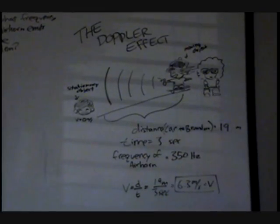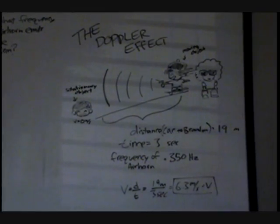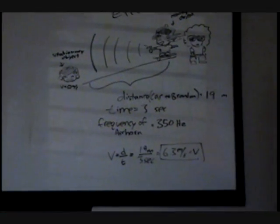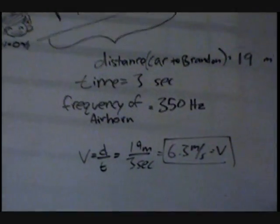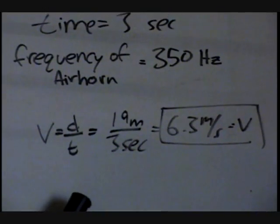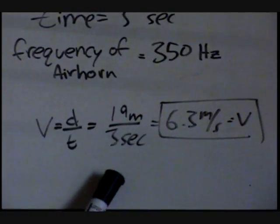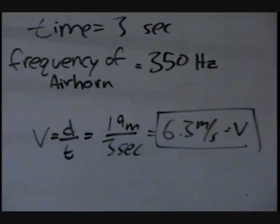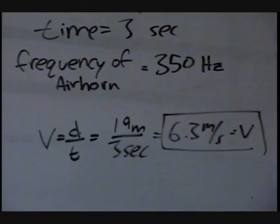The distance between me and him is 19 meters. The time it took for him to approach me with the air horn is 3 seconds. So to find the velocity of him, we can take the distance between us, which is 19 meters, and the time, which is 3 seconds, and divide them, which equals 6.3 meters per second, which was Philip's final velocity.